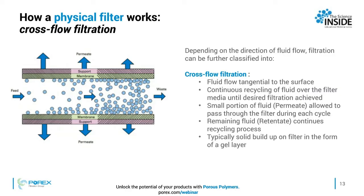The other type of filtration is called cross-flow filtration, where the fluid actually flows tangentially to the surface of the filter. There must be a continuous recycling of fluid or the filter media over a period of time until the desired filtration is achieved. A small portion of the fluid, which is called the permeate, is allowed to pass through the filter during each of these cycles, and the remaining fluid will continue to recycle through the process.